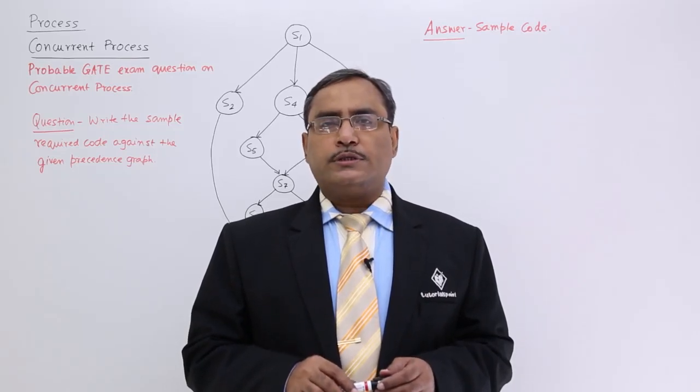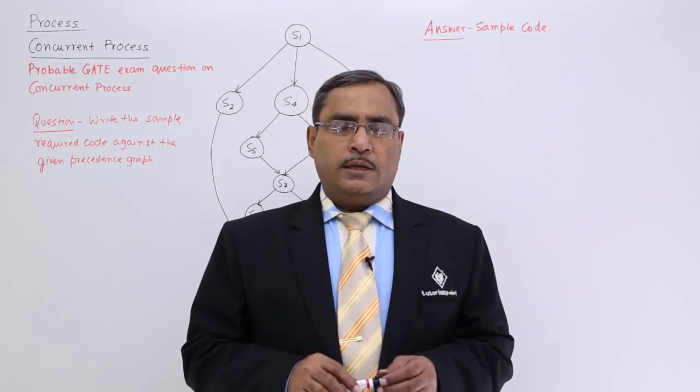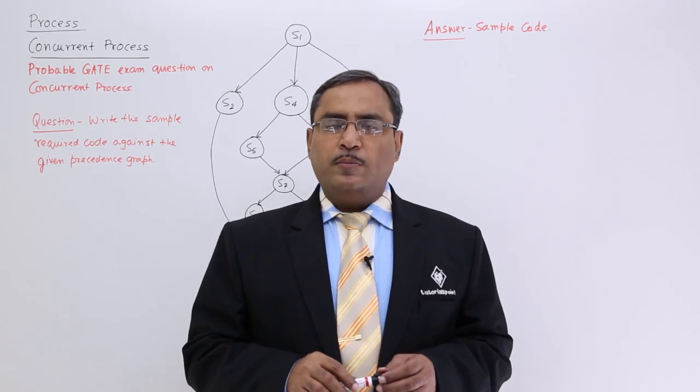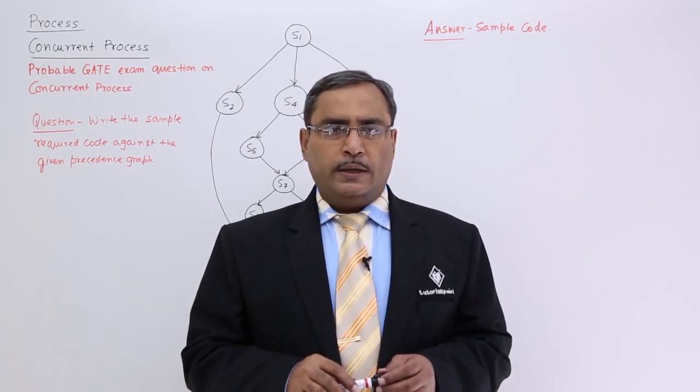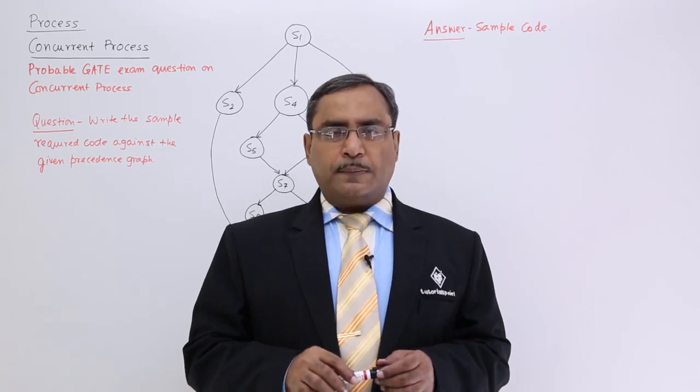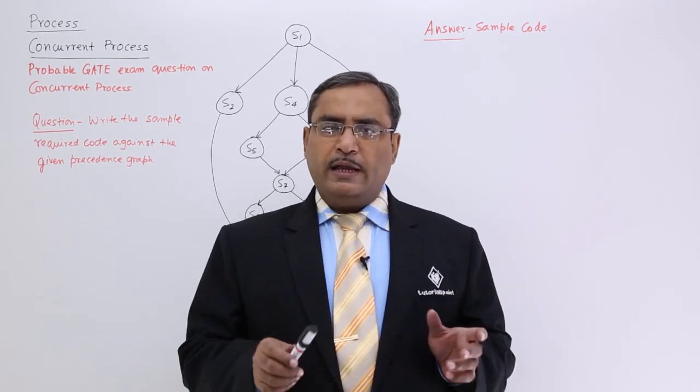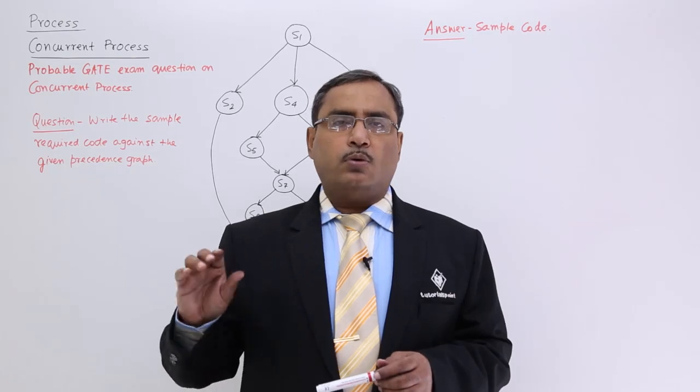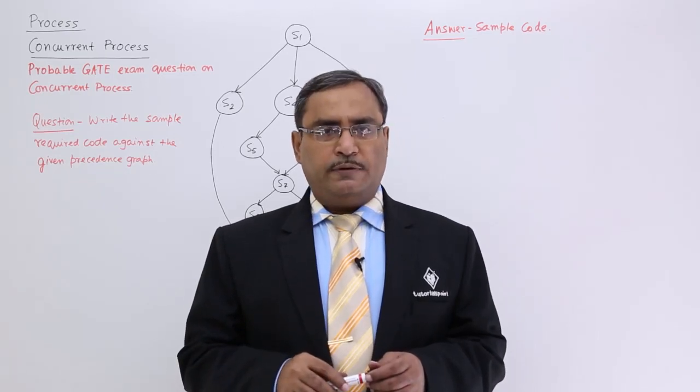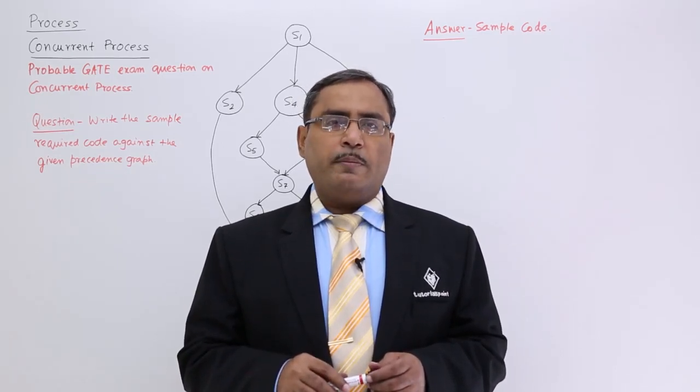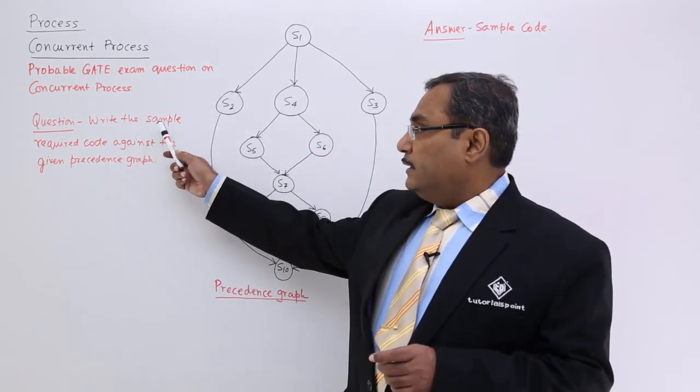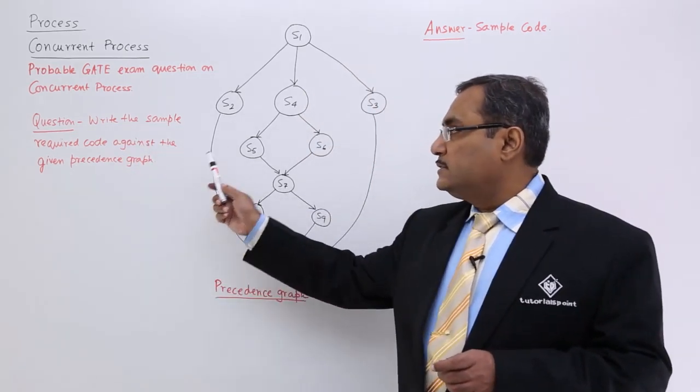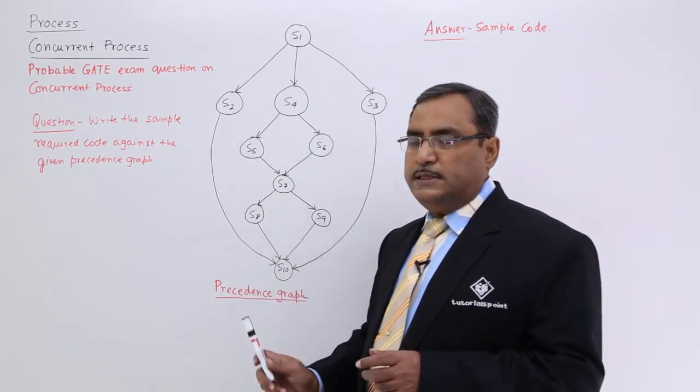Let us solve one probable GET question on concurrent processes. Here a precedence graph will be given. We are trying to write the respective sample code. In our GET exam, such precedence graphs may be given and four sample codes will be there. You shall have to select the sample code which is commensurate with the precedence graph. The question is: write the required sample code against the given precedence graph.